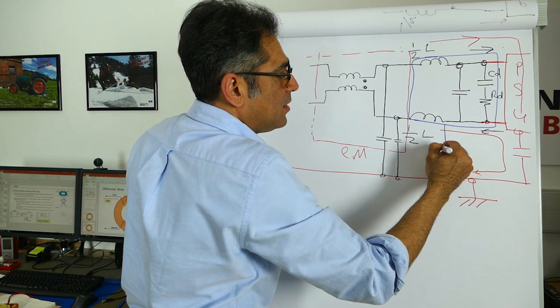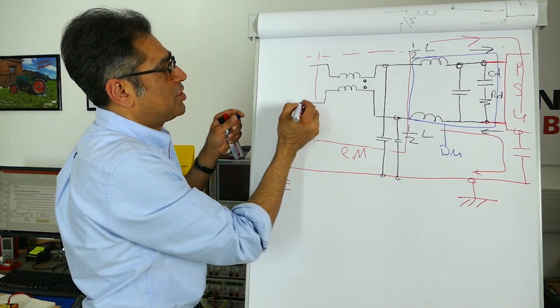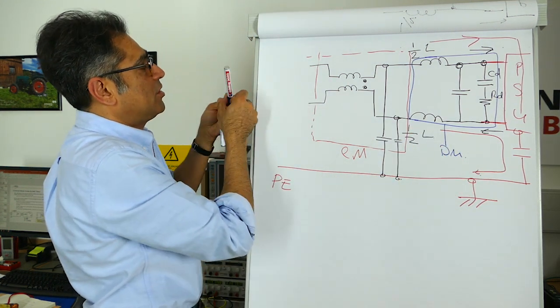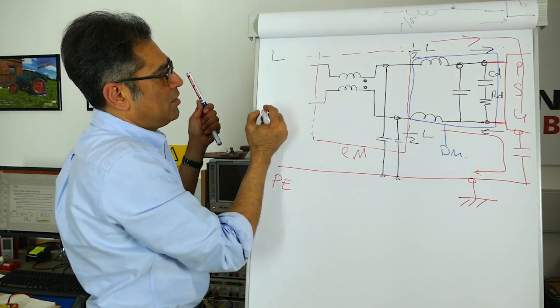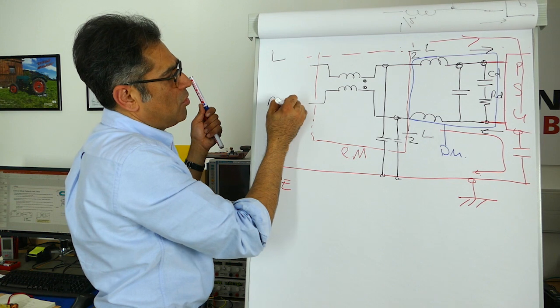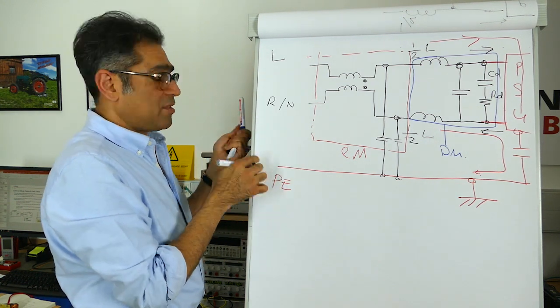This is the common mode section and let's use a different color. This is the differential mode section and then you've got here your line, your return or neutral and your protective earth.